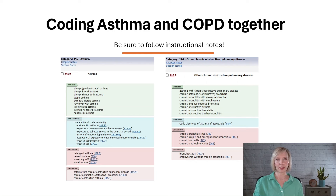It is possible for a patient to be diagnosed with both COPD and asthma. Although they are separate conditions, there are specific scenarios where only the COPD code is used and other instances where both the asthma and COPD codes are assigned together. In ICD-10, asthma in a patient with coexisting COPD is classified under Category J44, Other Chronic Obstructive Pulmonary Disease.